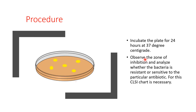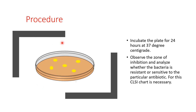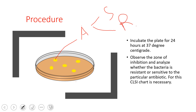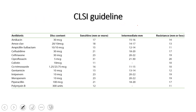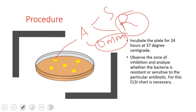To interpret results, we use the CLSI guidelines. For example, if there is no zone of inhibition around a disk — say amikacin at 30 mcg, which requires at least 17 mm to be called sensitive — and the zone measures zero mm, then the bacteria is classified as resistant.